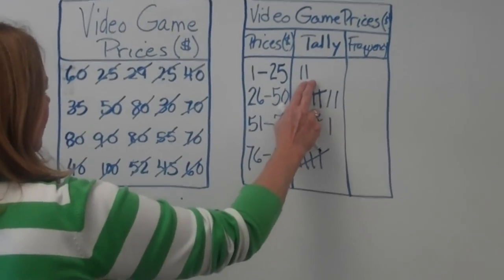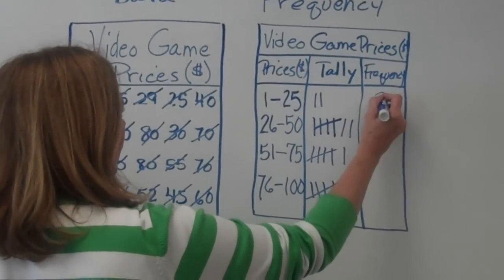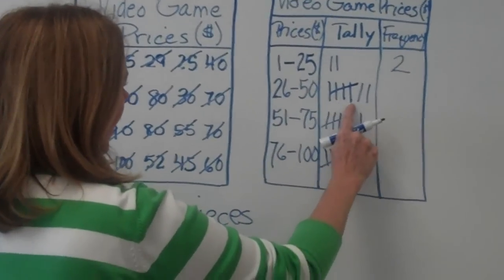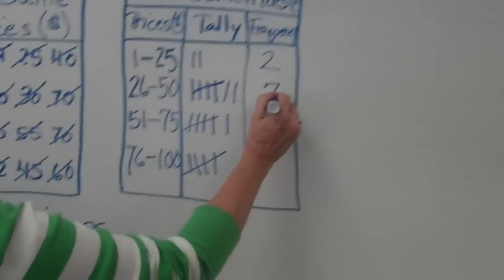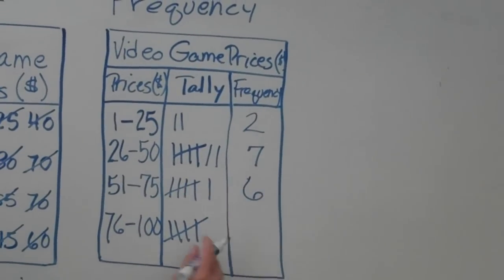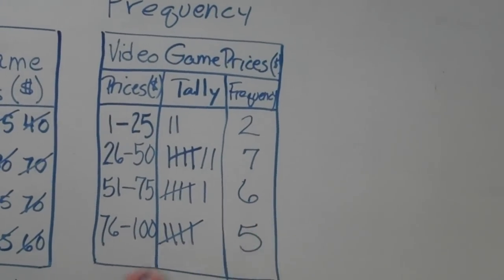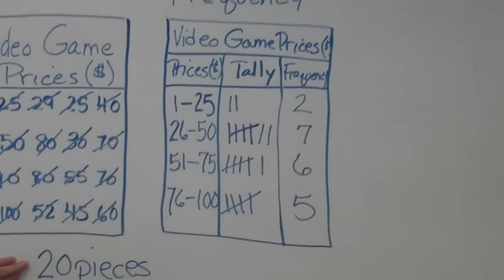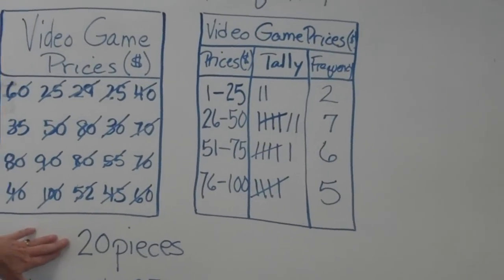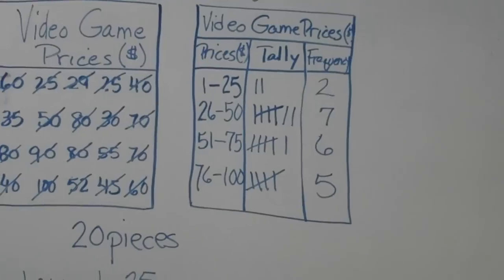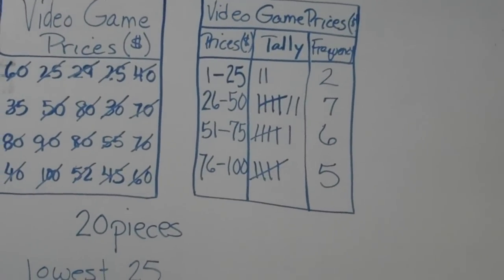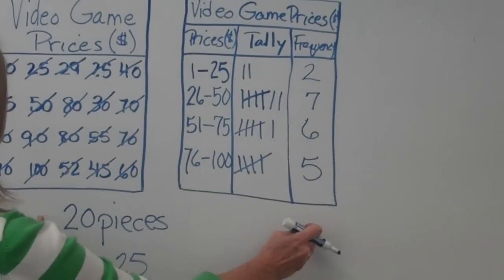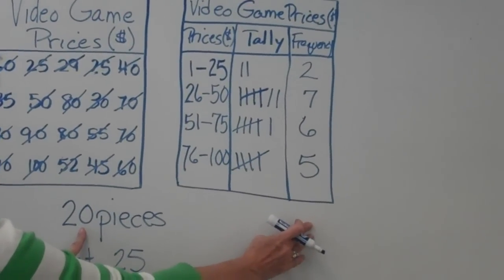Now, what you're going to do is take your tally marks and put the total of your tally marks in your frequency column. The next interval had 5, 6, 7, then 5, 6, and 5. Now, back over here, we said we had 20 pieces of data. I want you to check your work at this point. Stop and make sure you've counted everything.